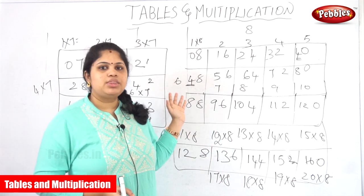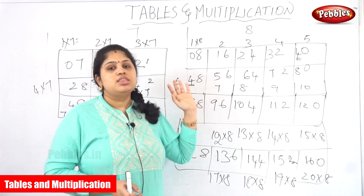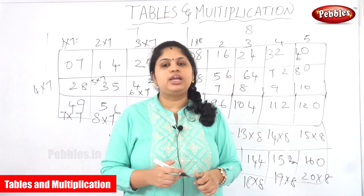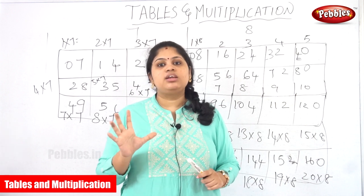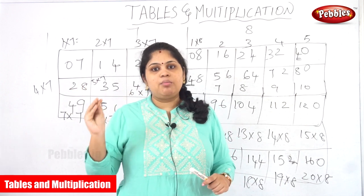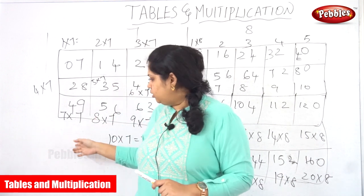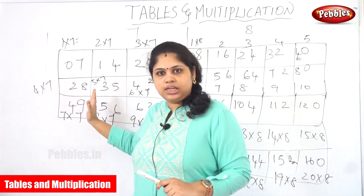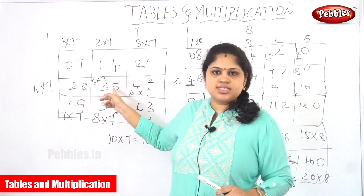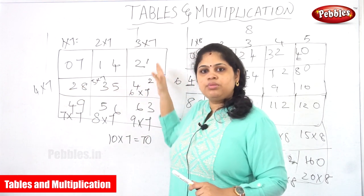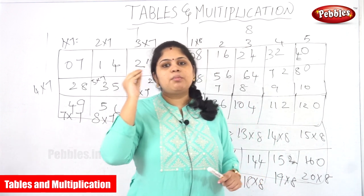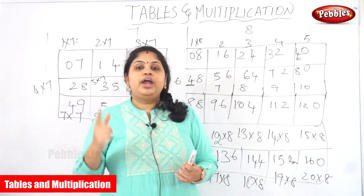Hope you all understand how the seventh and eighth tables work. This is the easiest method. You have to be very clear on every grid method. In the three table the grid works from down to upwards starting from the forward; in the seventh table it starts from upward down and from the backward. You want to remember those differences.